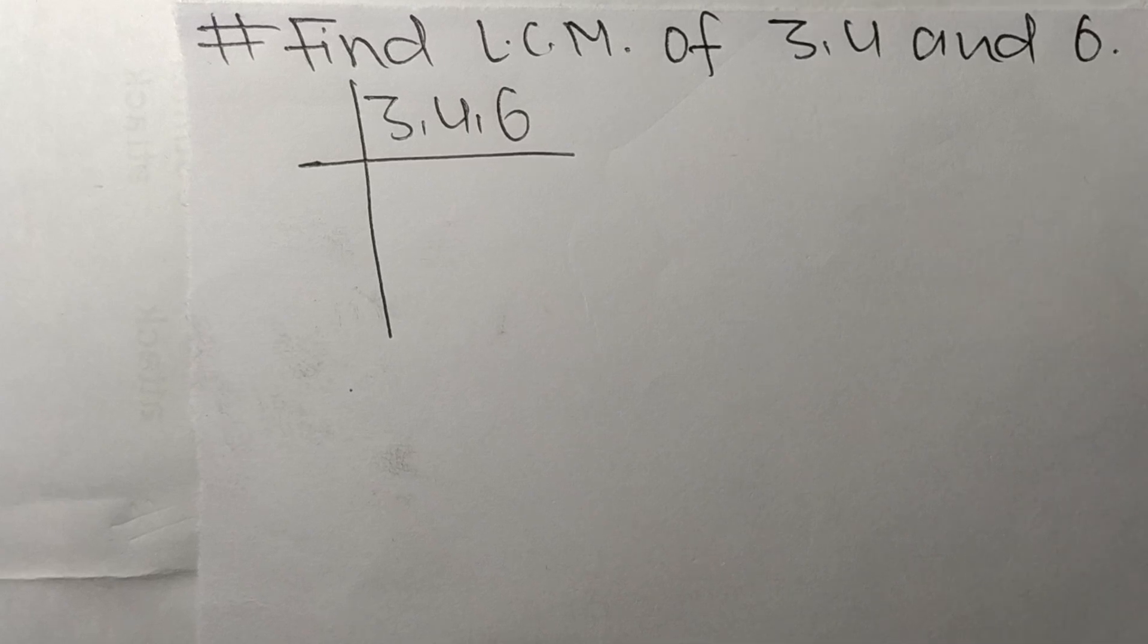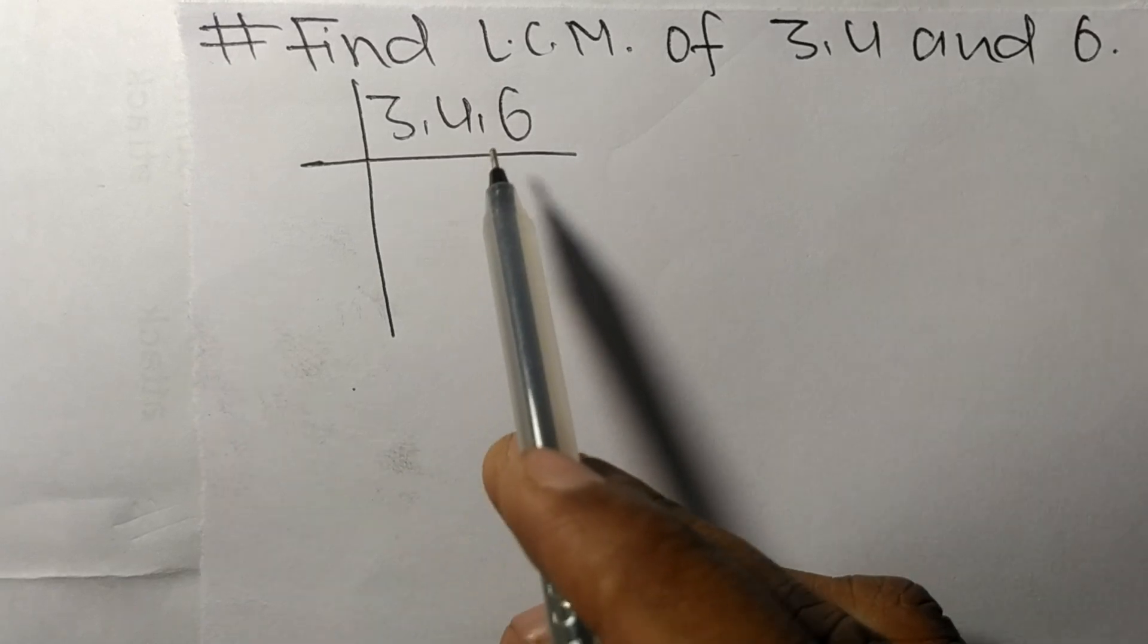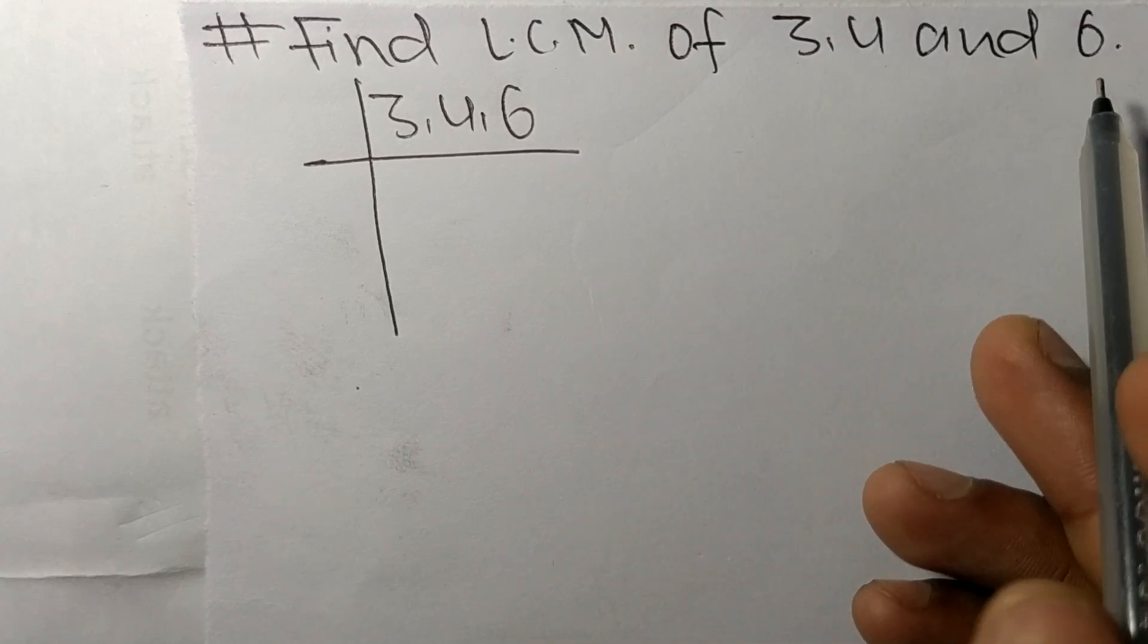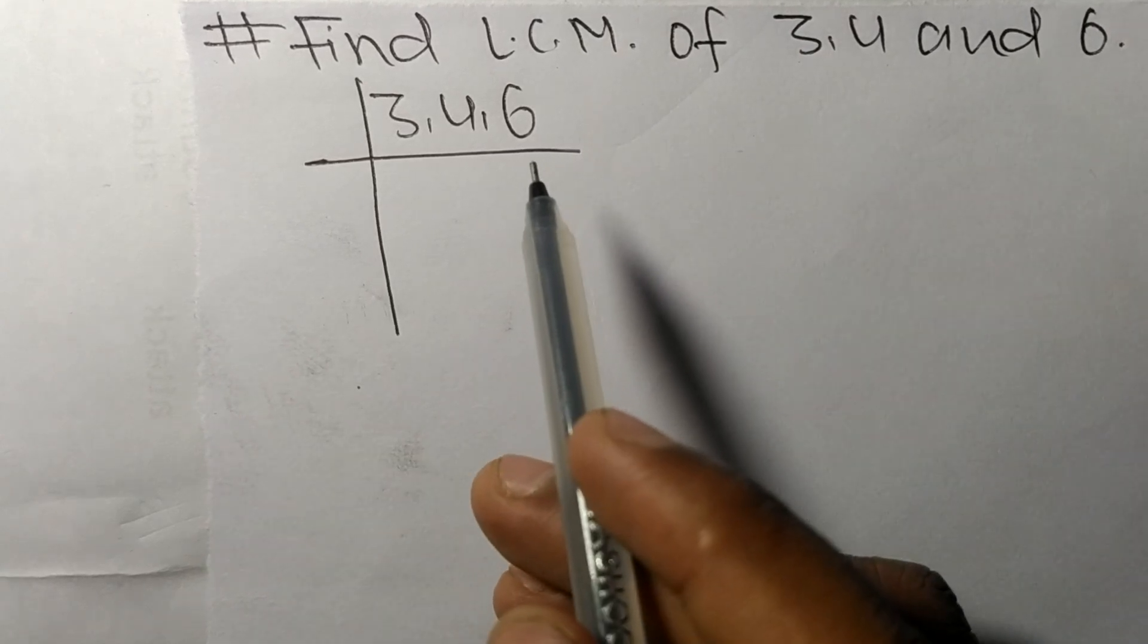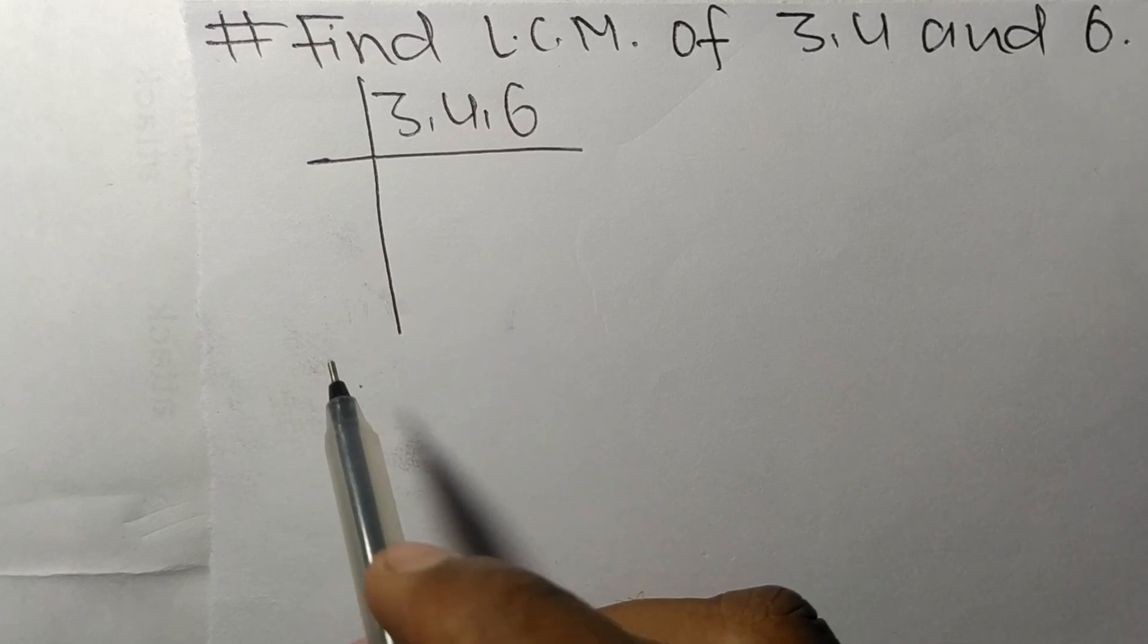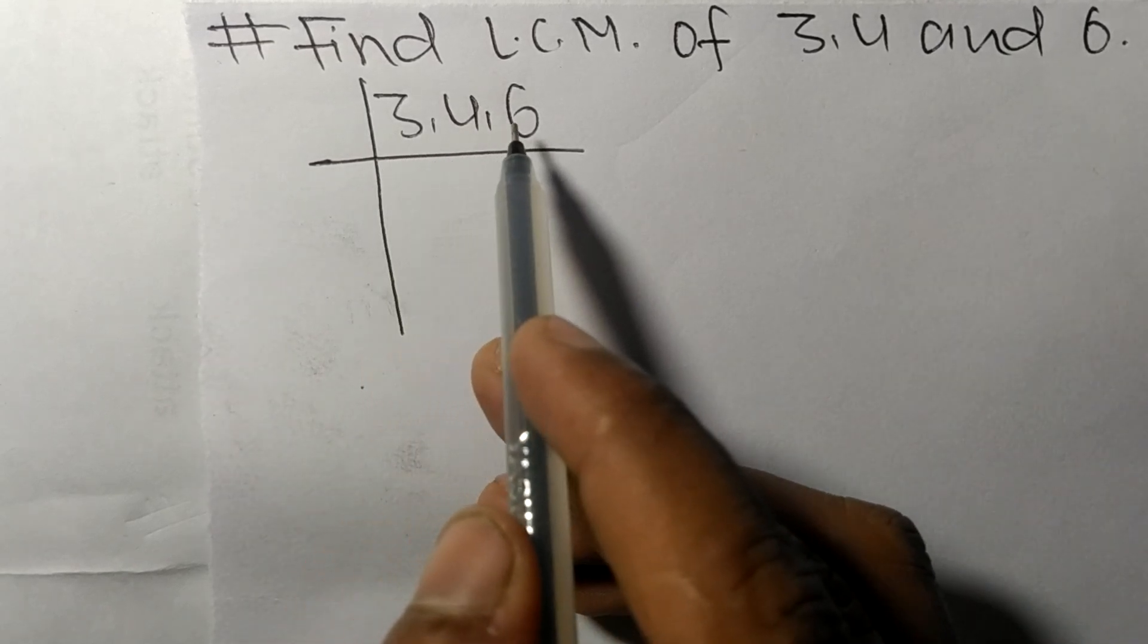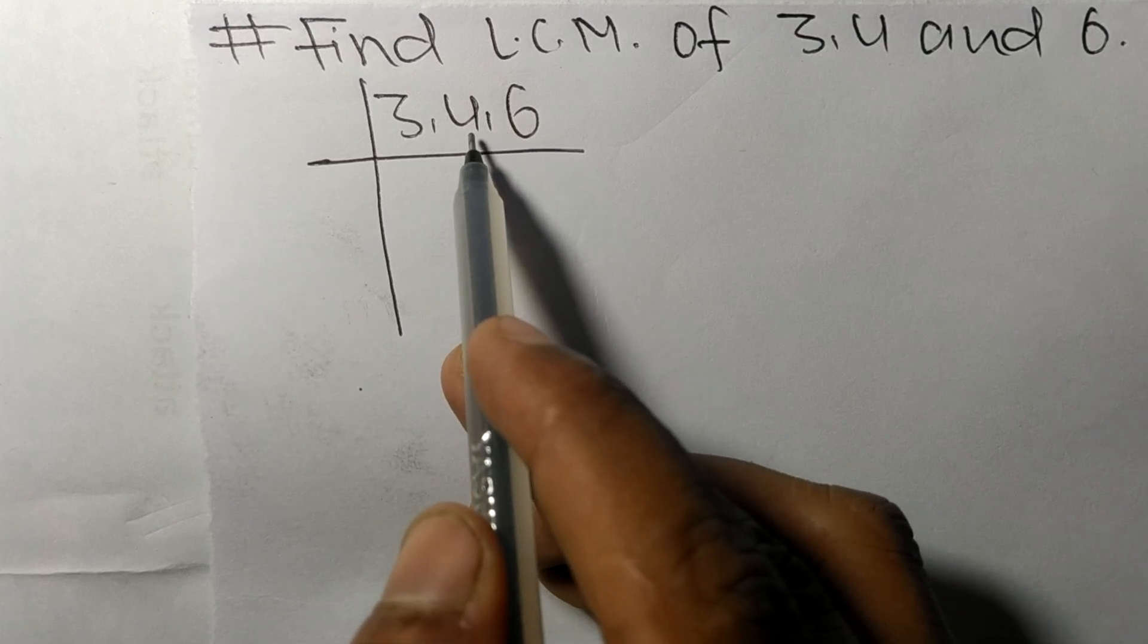Today in this video we shall learn to find the LCM of 3, 4, and 6. To find LCM, we have to choose the lowest number that can exactly divide any two of these numbers. So 4 and